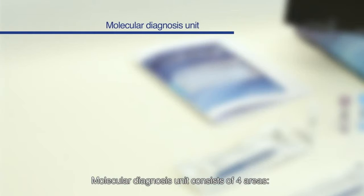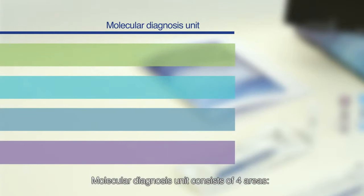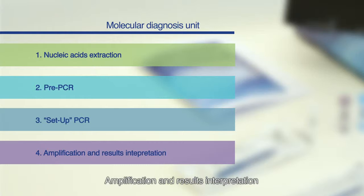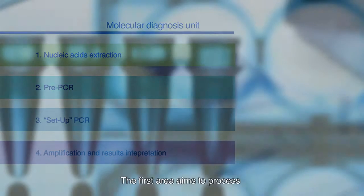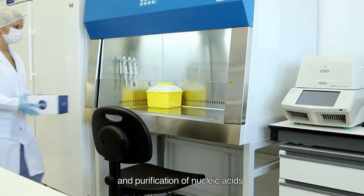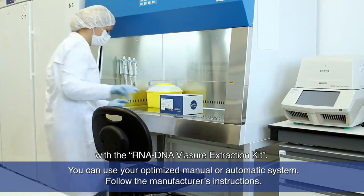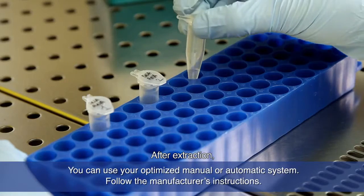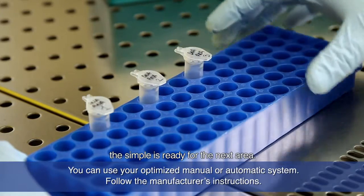Molecular diagnosis unit consists of four areas: nucleic acids extraction, pre-PCR setup, PCR amplification and results interpretation. The first area aims to process potentially infectious samples and subsequent extraction and purification of nucleic acids with the RNA-DNA Viassure extraction kit. After extraction, the sample is ready for the next area.